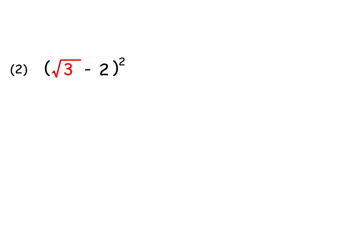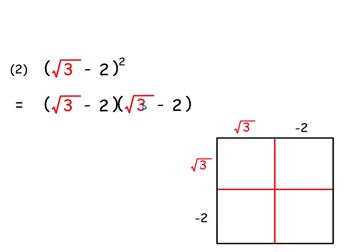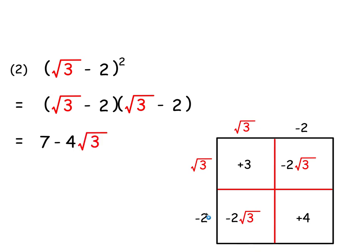Another example: root 3 minus 2, squared — multiplied by itself. Using the rectangle: root 3 times root 3 is 3; root 3 times negative 2 is negative 2 root 3; negative 2 times root 3 is negative 2 root 3; and negative 2 times negative 2 is positive 4. Collecting: 3 plus 4 is 7, and negative 2 root 3 minus 2 root 3 is minus 4 root 3. The answer is 7 minus 4 root 3.